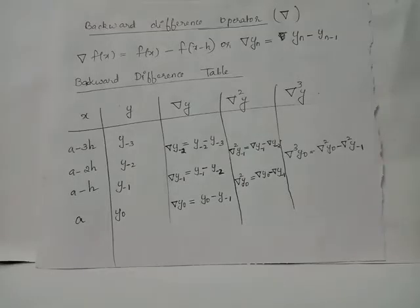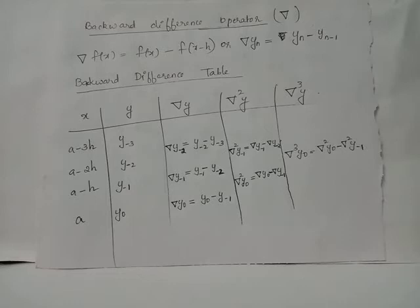The backward difference operator is notated using an upside-down triangle, called del. Operated on f of x, it gives the difference between f of x and the function's value at the decremented position x minus h. We have: backward difference of f of x equals f of x minus f of x minus h, which can also be written as del y_n equals y_n minus y_{n-1}.